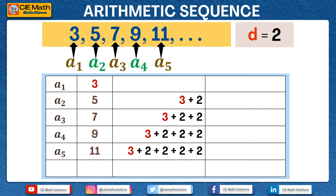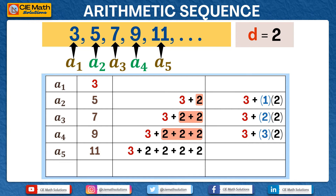Looking at the third column, the numbers added are all 2s. We can summarize the added numbers as multiples of 2. So for the second term, we rewrite 3 plus 2 as 3 plus 1 times 2, where 1 denotes the number of 2s added. For the third term, there are two 2s added, so we rewrite it as 3 plus 2 times 2. The fourth term is 3 plus 3 times 2, since there are three 2s added. And the fifth term becomes 3 plus 4 times 2.